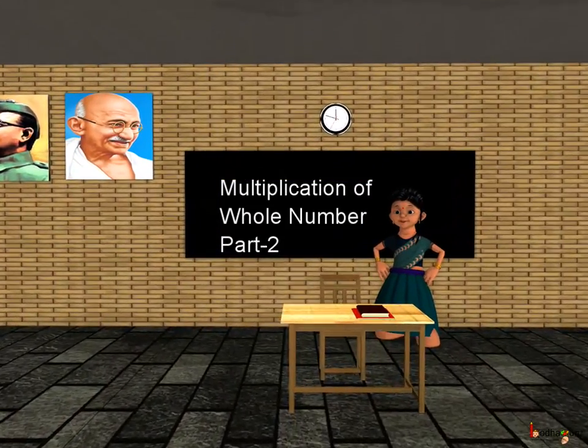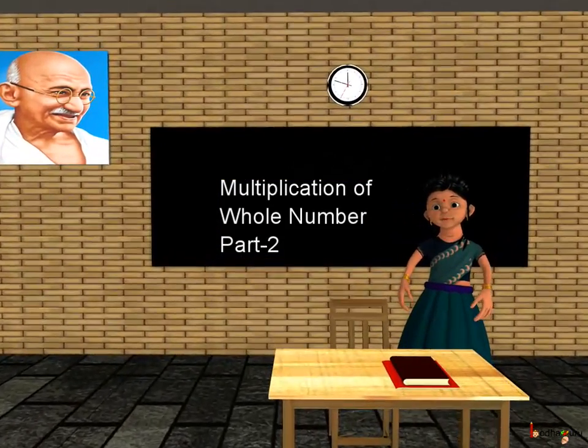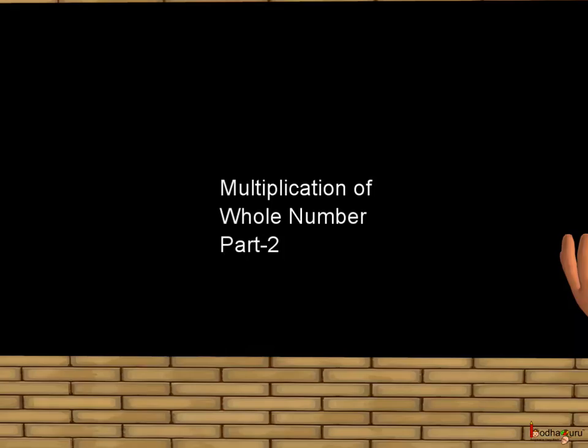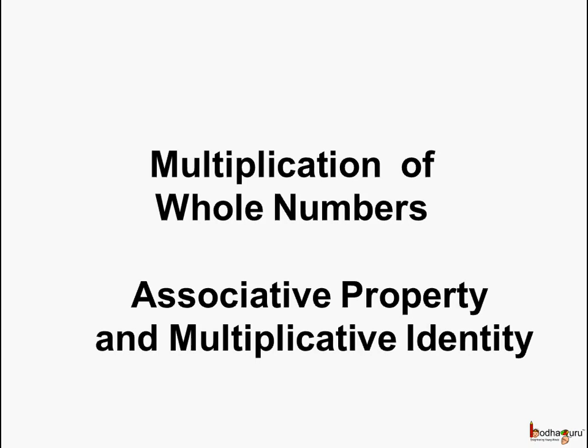Good morning children. You know about whole numbers and some of the properties related to multiplication of whole numbers, which are closure property and commutative property. So let us see the associative property and the multiplicative identity with relation to multiplication of whole numbers.